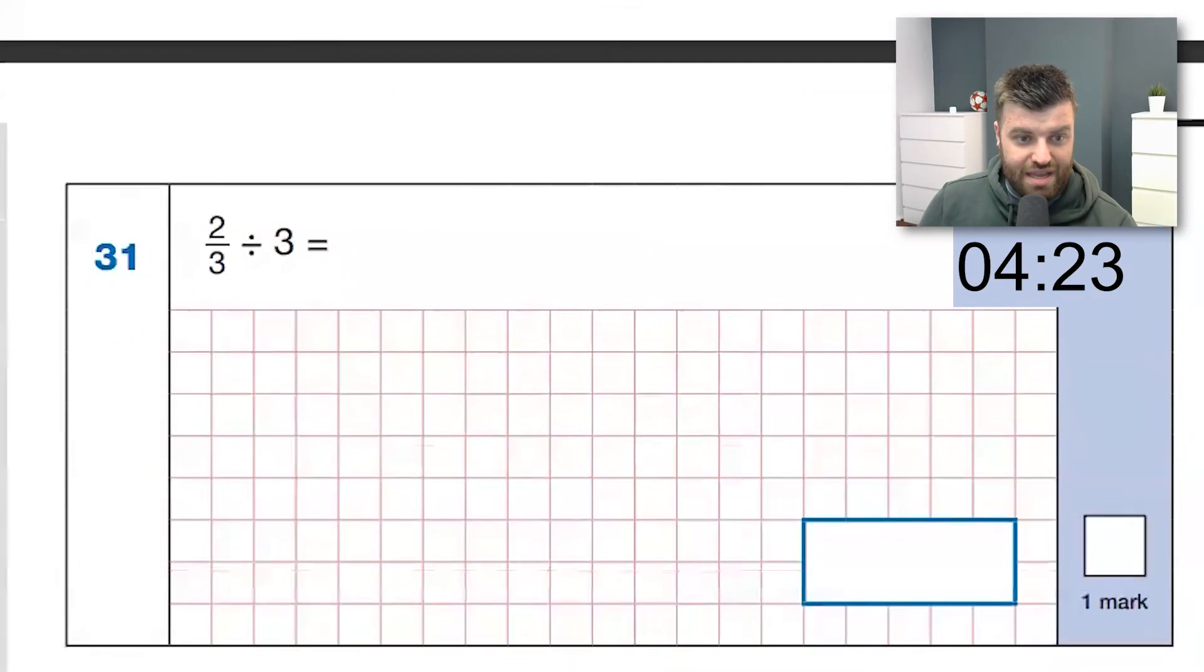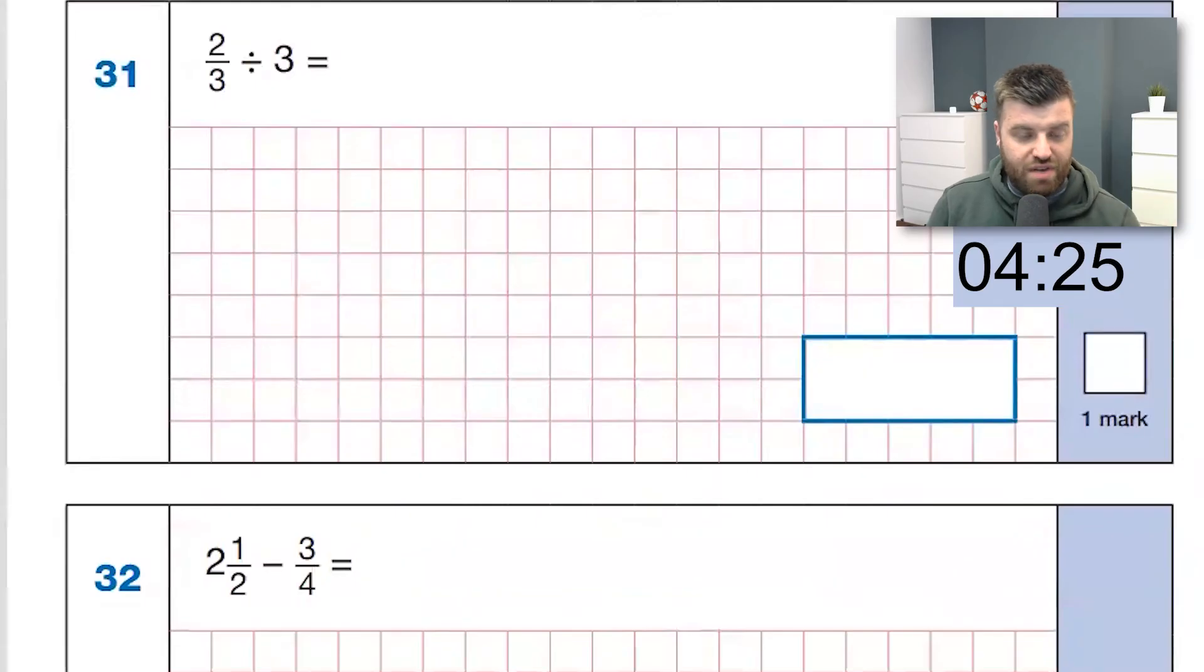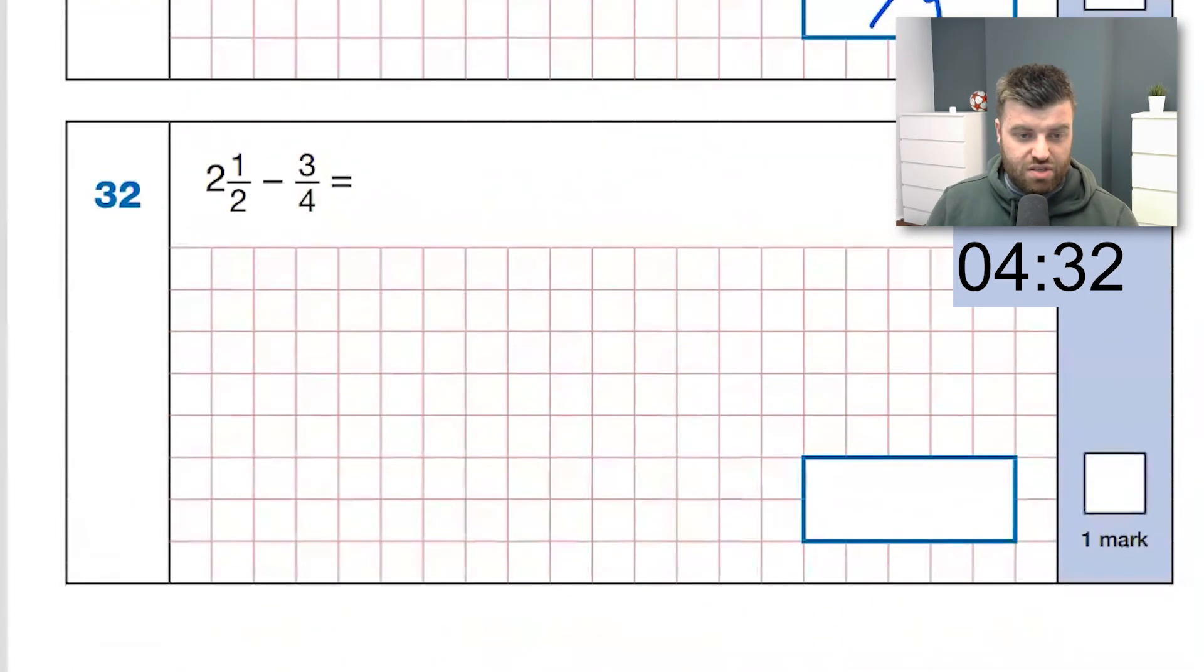Guys, I hope the timer is looking good for me. I have no idea. Two-thirds divided by three. Well, we're just going to change it to one-third and multiply. So we're going to have two over nine is the answer there. Question 32. Let's change this to two and two quarters. Two and two quarters take away three quarters. It's going to be one and three quarters.